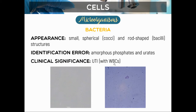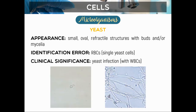The clinical significance for bacteria in urine is UTI with WBCs. If WBCs are absent, it cannot be called UTI — a high number of bacteria without WBCs may indicate an unpreserved specimen or contamination during sample collection. Those are our microorganisms.